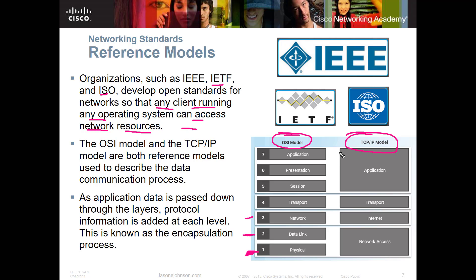You also need to know the TCP/IP model, which is a newer model that only has four layers: network access, the internet layer, the transport layer, and the application layer. At the A+ level you don't need to know it as in depth as at the Network+, Security+, or CCNA level, but you need a good understanding of the different levels, what they do, and which ports correspond to each one.